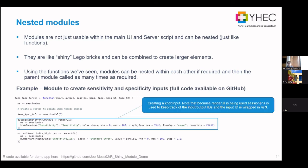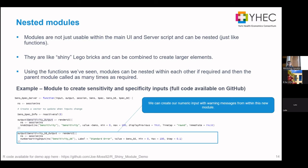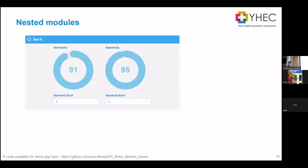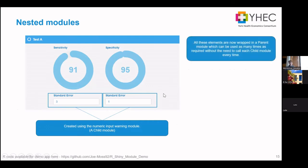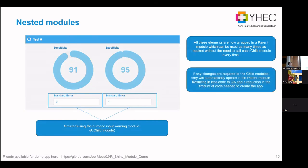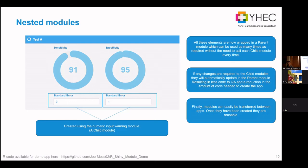Here's an example of nesting. This is a server that's got a unique knob input, but I'm also calling my number warning input module from within it — a module nested inside another. What we saw in the app: the two numeric input warnings are a child module, while the entire test A box is a parent module. I can have test A, B, C, D for however many comparators — one module repeated over and over again, giving me sensitivity, specificity inputs and two standard errors with data validation built in.